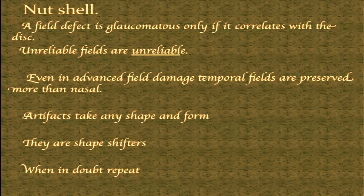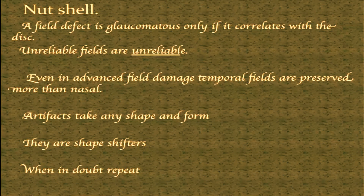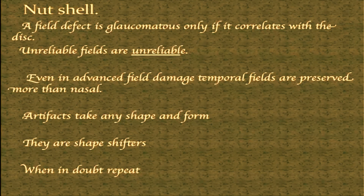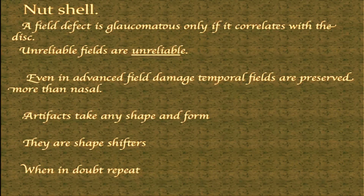To summarize: unreliable fields are unreliable. Even in advanced field damage, temporal fields are preserved more than nasal. Artifacts are shape-shifters — they can take any shape, any form — and when you are in doubt, repeat. Glaucoma is one disease which gives you time to think. You don't have to decide now and here. When in doubt, you can always repeat.